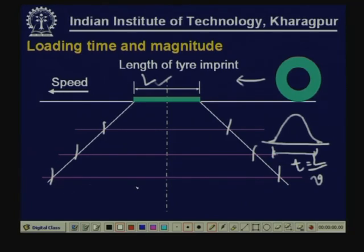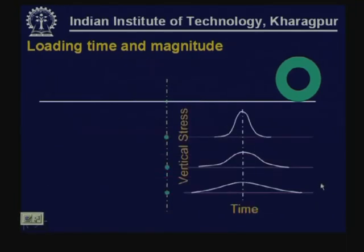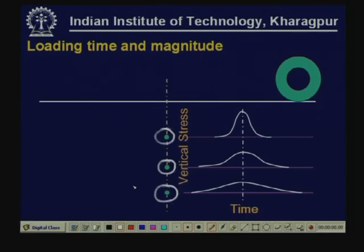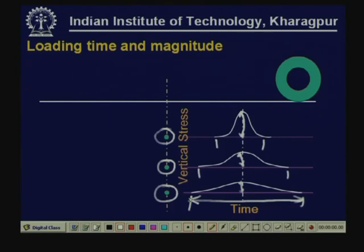At larger depths, the stress magnitude is going to be smaller but loading times are going to be larger. So the loading time corresponding to a deeper element is obtained by the dispersed length at that depth divided by the speed of the vehicle. In summary, at greater depths stress magnitude decreases but loading time increases.